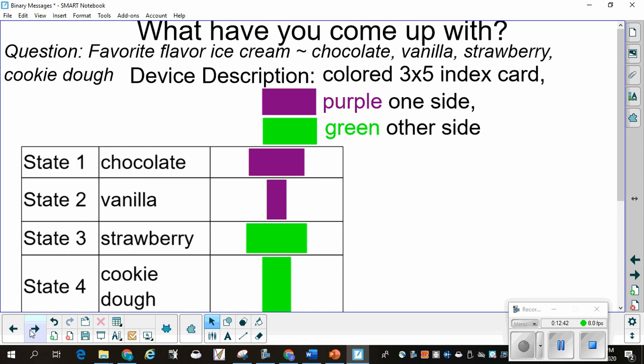What have you come up with? Well, here's just one example that I took from the first year that I taught this course. Somebody came up with, what flavor of ice cream do you like? Chocolate, vanilla, strawberry, or cookie dough? The device description was a simple color 3x5 index card that was purple on one side and green on the other. If you wanted chocolate, you showed the horizontal purple side. If you wanted vanilla, it was a vertical purple side. Strawberry was horizontal green and cookie dough was vertical green.